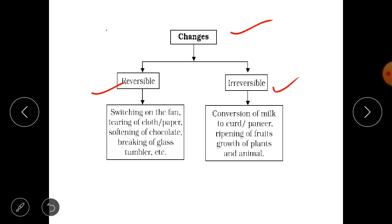Look now we are understanding the examples. If you have switched on the fan you can even turn it off. So this is an example of reversible change. Tearing of cloth or paper - we can paste paper, we can stitch cloth. Softening of chocolate - you can put that chocolate back to refrigerator and the chocolate will become hard again.